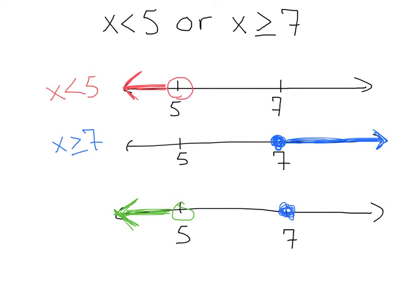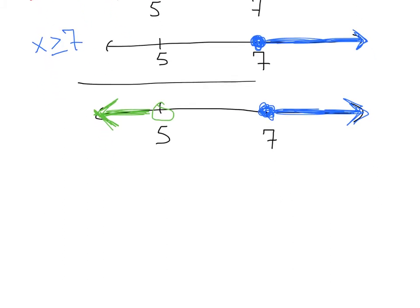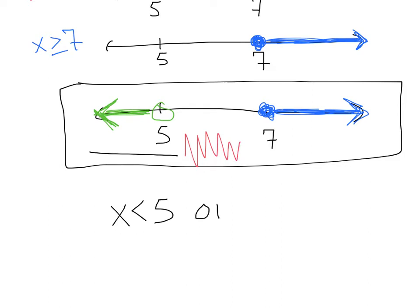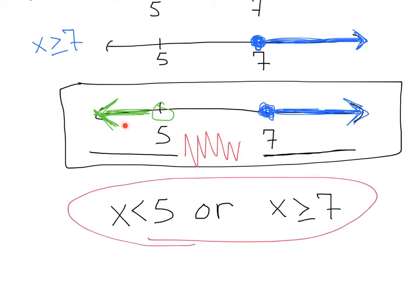That's a solid closed dot shaded to the right. My final answer, going left to right on the graph: x is less than 5 — that represents this portion here — and whenever you have a gap, that's when you write an or. So: x is less than 5, or x is greater than or equal to 7. That's my final answer and my final graph.